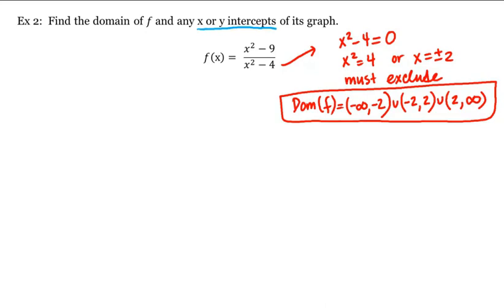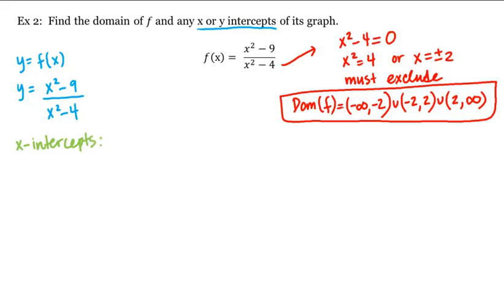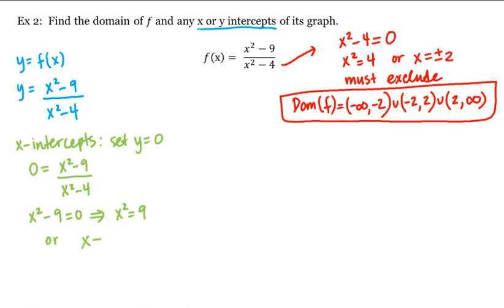Now to find the intercepts, again we'll let y equal f of x. In other words, y is equal to x squared minus 9 divided by x squared minus 4. Let's start with the x-intercepts, which we can find by setting y equal to 0. This gives us 0 is equal to x squared minus 9 divided by x squared minus 4. A fraction equals 0 when the numerator equals 0 and the denominator does not. So where is x squared minus 9 equal to 0? This happens when x squared equals 9, or x equals plus or minus 3. Neither of these values makes our denominator 0, so they're both x-intercepts.